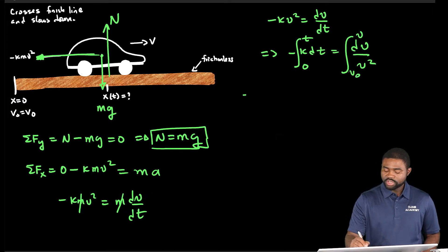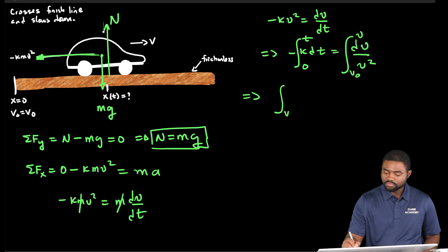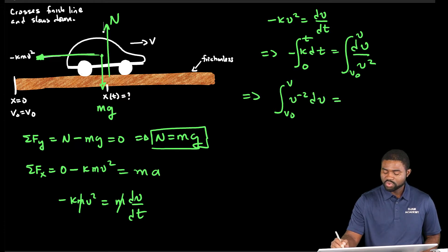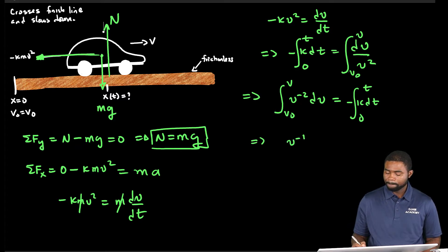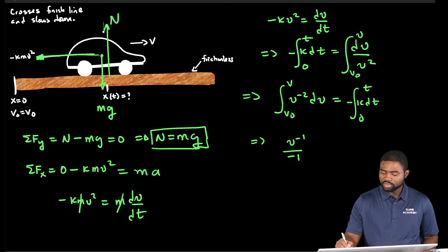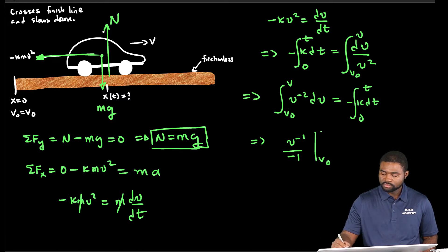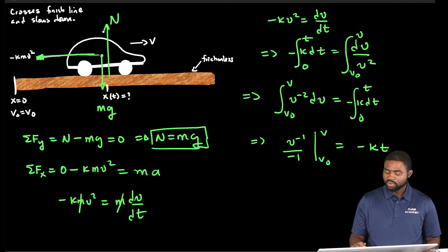The integral from v₀ to v of v⁻² dv equals the integral of negative k dt from 0 to t. The left side evaluates to v⁻¹ divided by negative one, evaluated from v₀ to v, which gives negative k t.